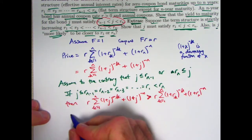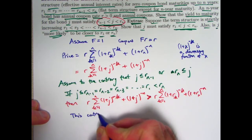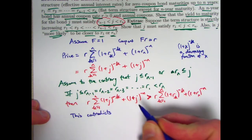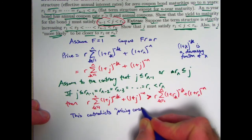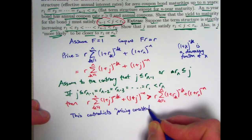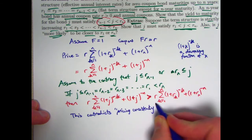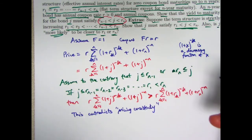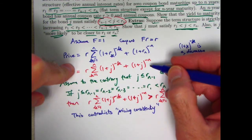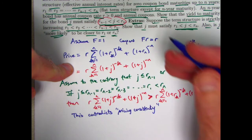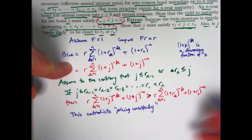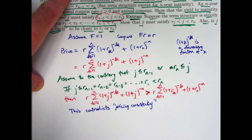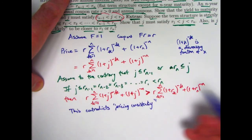But that right away is a contradiction — it contradicts pricing consistency. J, the yield rate, is defined in such a way that these two price expressions are equal. That's its definition. So if one is bigger than the other, they're not equal, and that's a contradiction. So this possibility is excluded.